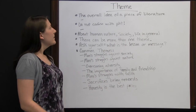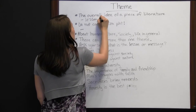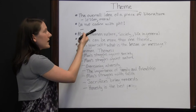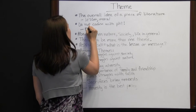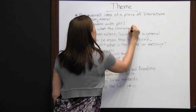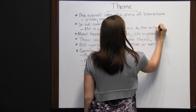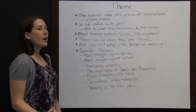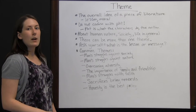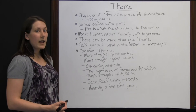Theme is the overall idea of a piece of literature. Think about the lesson or moral of the story that the author is trying to get across to you. One thing to remember is do not confuse theme with plot. Plot is what the characters do — it's the action of the story — and it does not have to do with the overall lesson or message that the author is getting across. Obviously what the characters do is going to help you understand the theme, but theme is going to be more about human nature, society, and life in general.